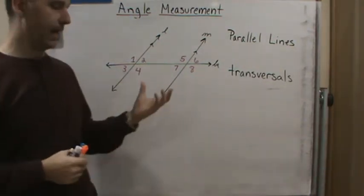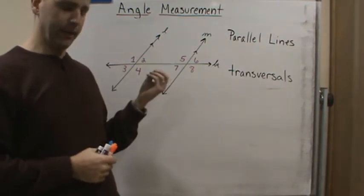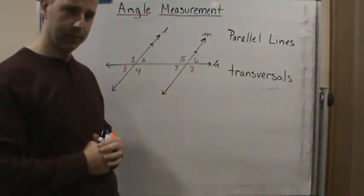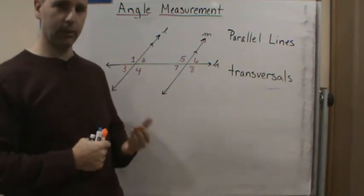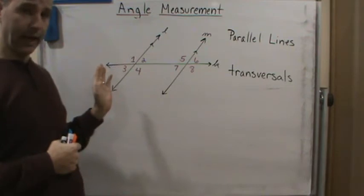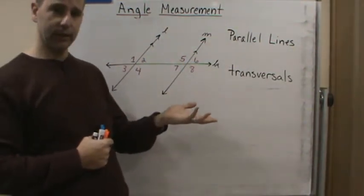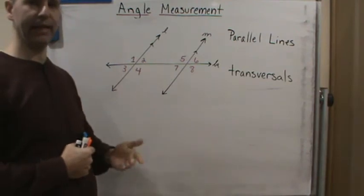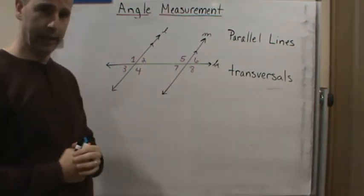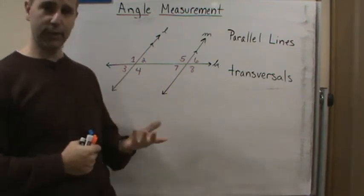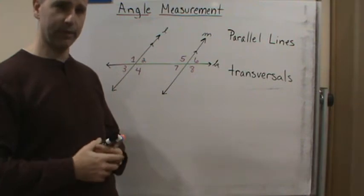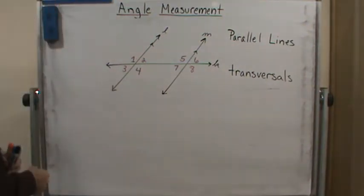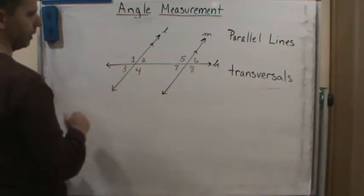What does it mean to be parallel lines? Parallel lines are any two lines that will never intersect. So no matter how far in either direction you extend the line, they will never intersect. Now, if we have another line that intersects two or more parallel lines, we call that line — in this example K — a transversal. A transversal is a line that intersects two or more parallel lines. When that's the case, interesting things come out of that. We know certain things about the angles formed by the transversal. I have an example of a transversal K with two parallel lines, L and M.